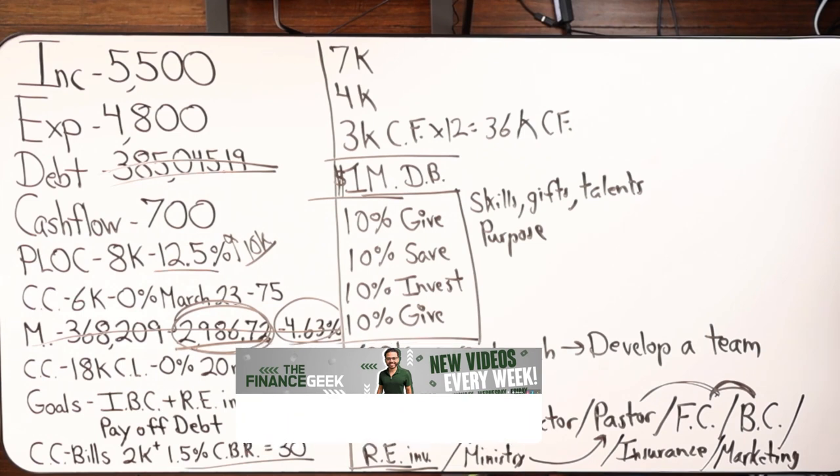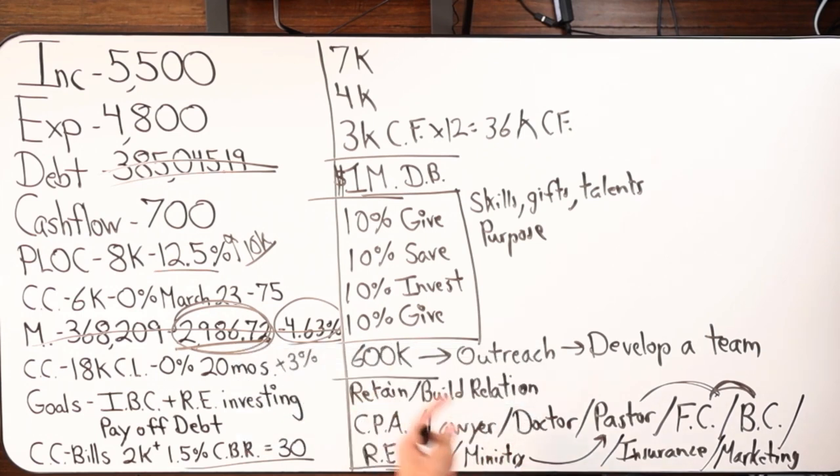And maximize those dollars. How can I multiply that? I want to make that $600k into $6 million in the next five to seven years. That's going to be my ratio.